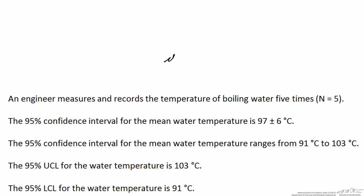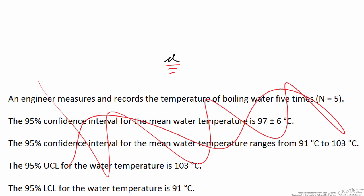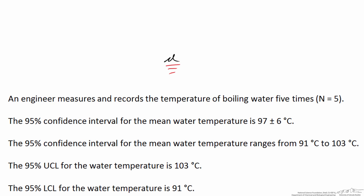What we really want to get at is the true average, the true mean water temperature. We use the Greek letter mu to symbolize that, and if we knew that, we wouldn't need to do any of this confidence interval, because we already know the true mean water temperature. Unfortunately, we never get to know that value.